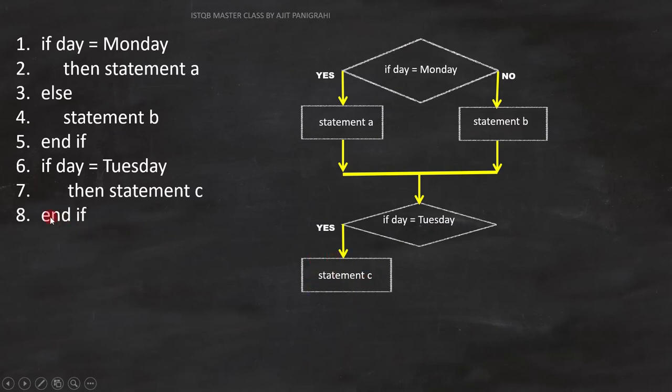The eighth line is end if. The end if is for condition on line number 6. And this is how we have to represent it on flowchart. With this, the flowchart is complete.